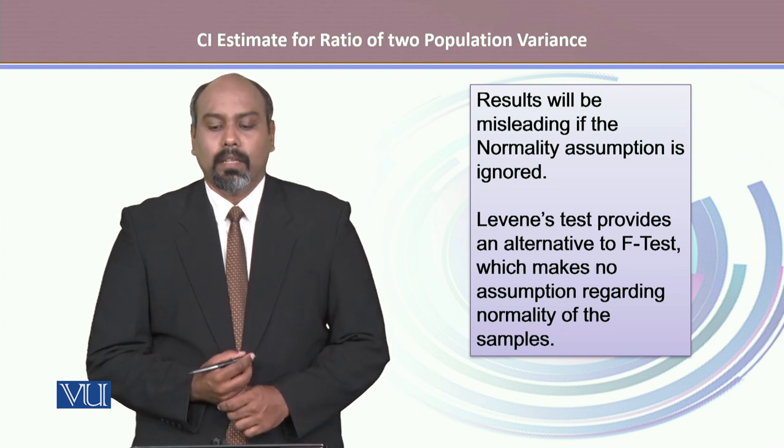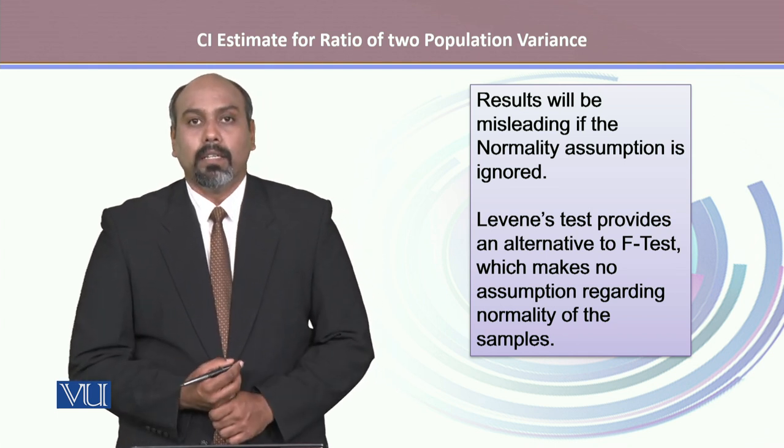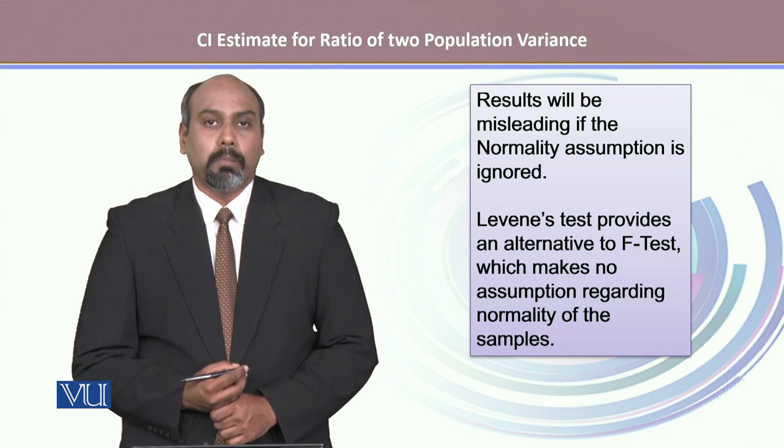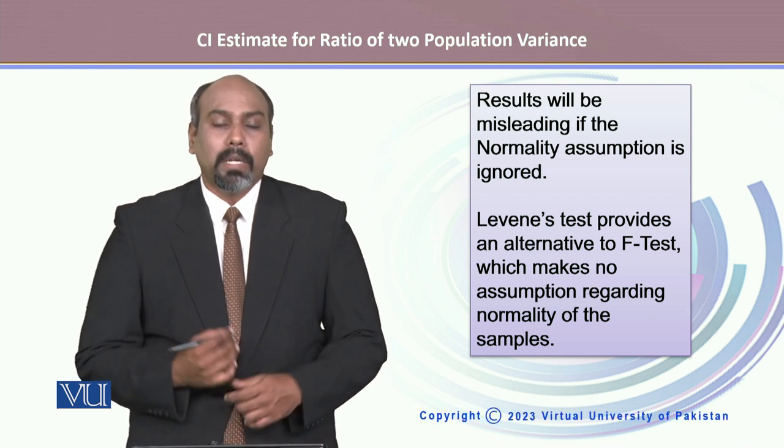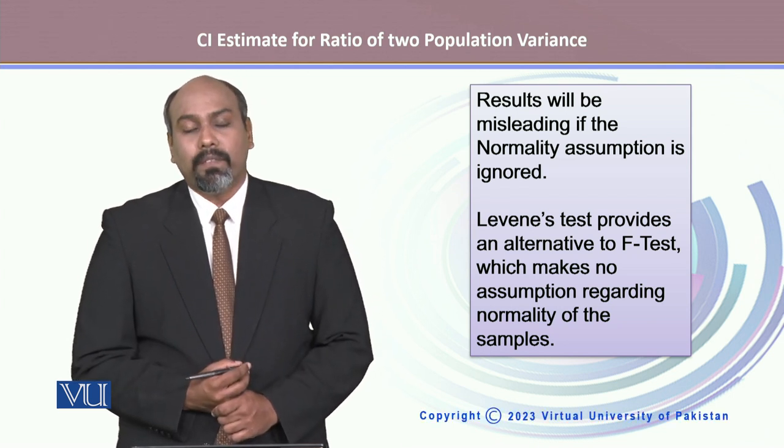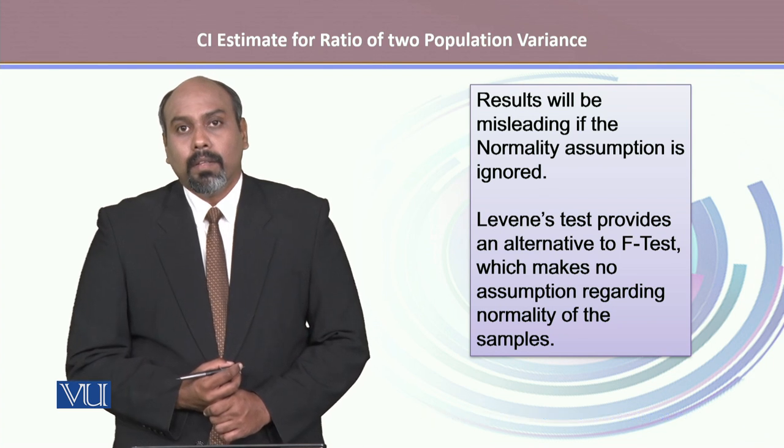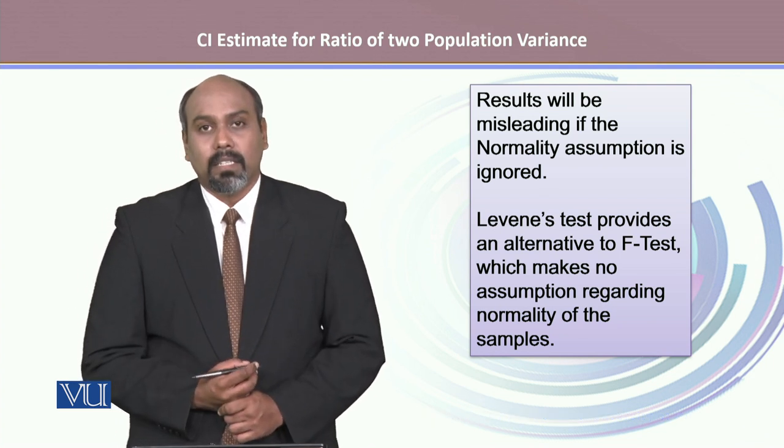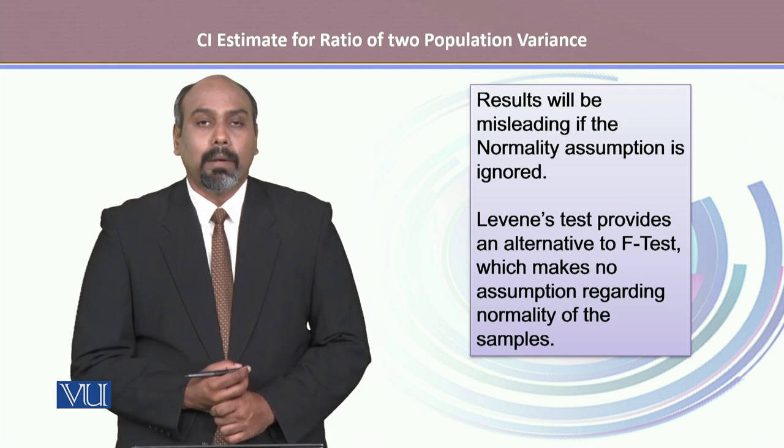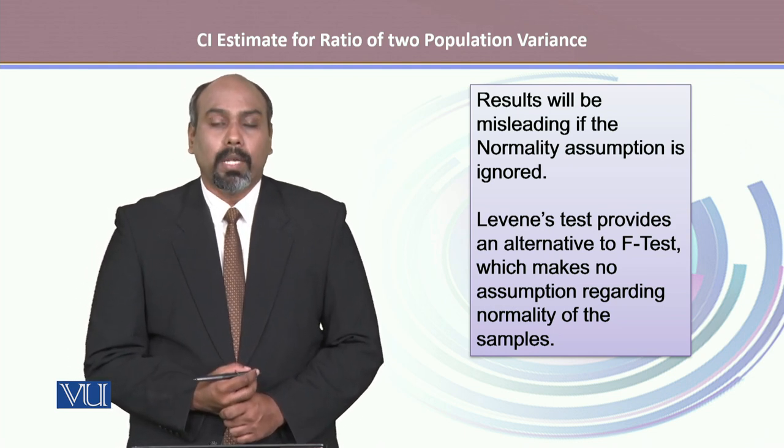Results will be misleading if the normality assumption does not meet. But there are other alternatives to the F test, like Levene's test. It does not make any assumption about the normality of the two populations.